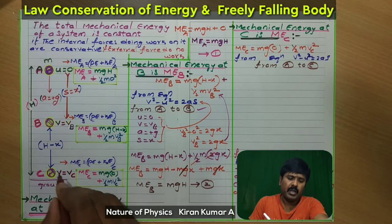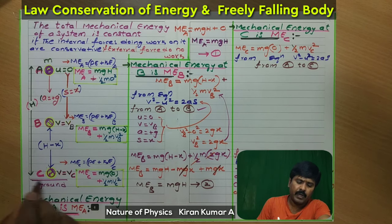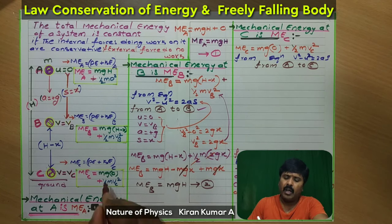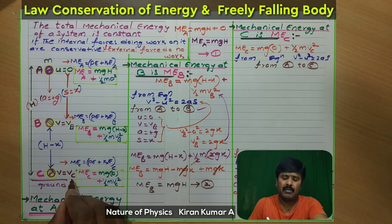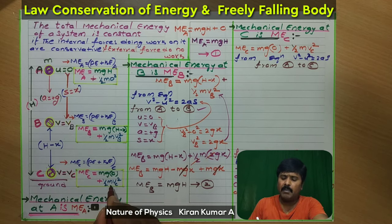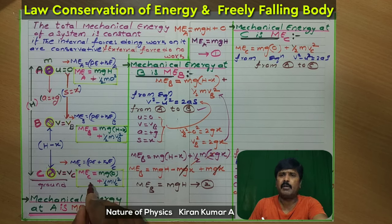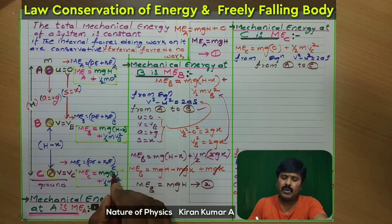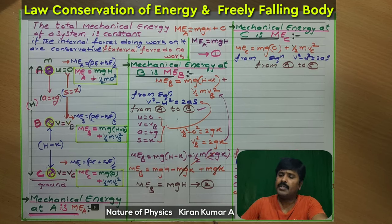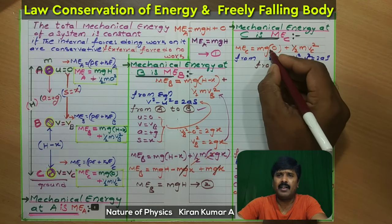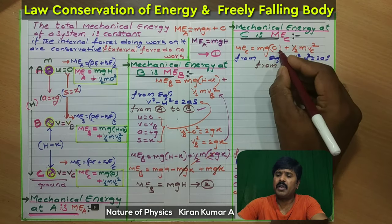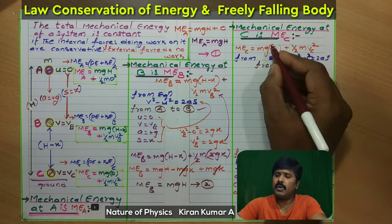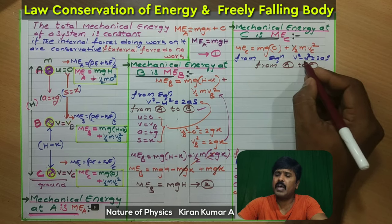Now I am going to explain point C — the ground position. When the body reaches the ground, height is equal to zero, so potential energy is zero. The body reaches the ground with final velocity vc, so kinetic energy is (1/2)mvc². Mechanical energy at point C equals potential energy zero plus kinetic energy (1/2)mvc². Using the equation v² − u² = 2as from point A to point C, with potential energy zero since height is zero.